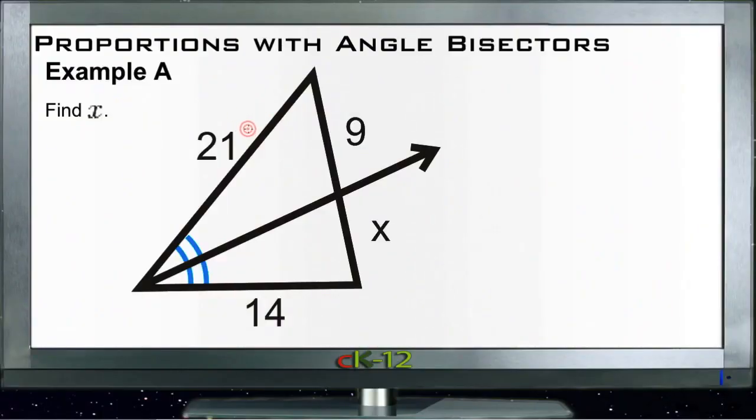Proportions with angle bisectors, Example A. Find x, so we need to find this segment down here, the length thereof. And we know that because this angle here, we're going to call this angle A, because angle A was bisected.